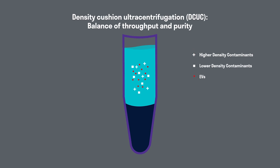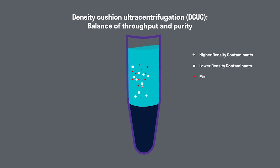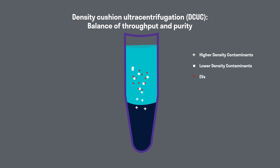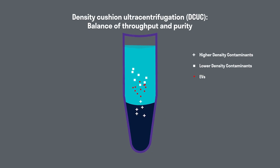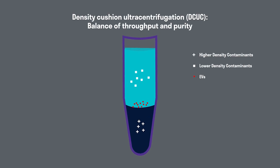Density cushion ultracentrifugation, or DCUC, uses a high-density medium like sucrose or iodixanol to create a cushion at the bottom of the sample tube, which the EVs are gently pelleted into.